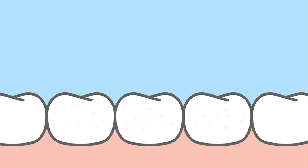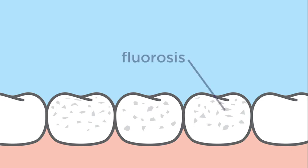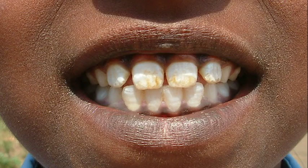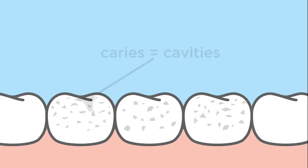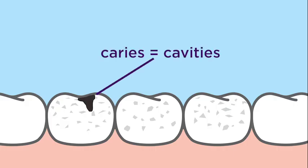Dental fluorosis is a developmental defect that affects tooth enamel. It's caused by the excessive ingestion of fluoride during childhood and results in pitting, poor mineralization, and increased porosity — all of which increases the risk of caries and tooth decay.